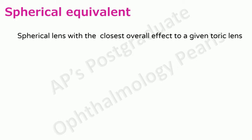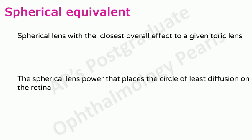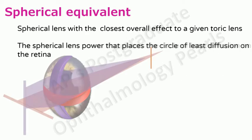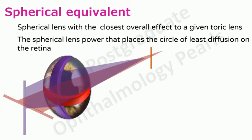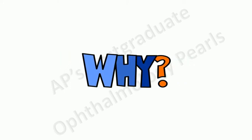There is another definition that is the spherical equivalent is that spherical lens power that places the circle of least diffusion on the retina. In other words wearing a spherical equivalent lens converts the effective power of the eye into one of mixed astigmatism so that the circle of least diffusion falls on the retina which gives the clearest possible vision in a case of astigmatism.